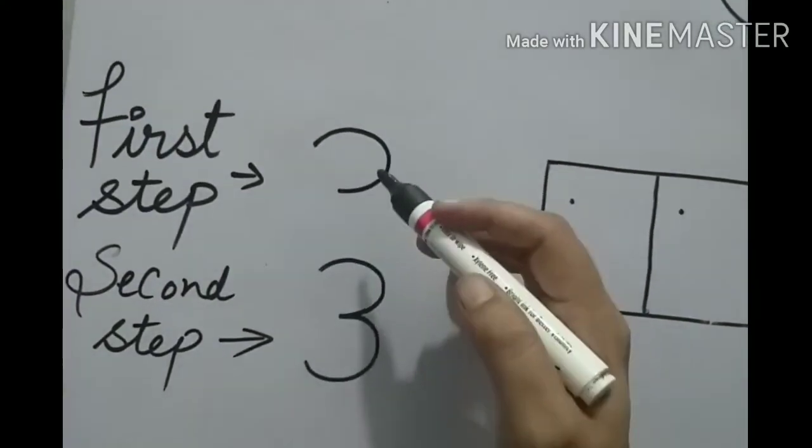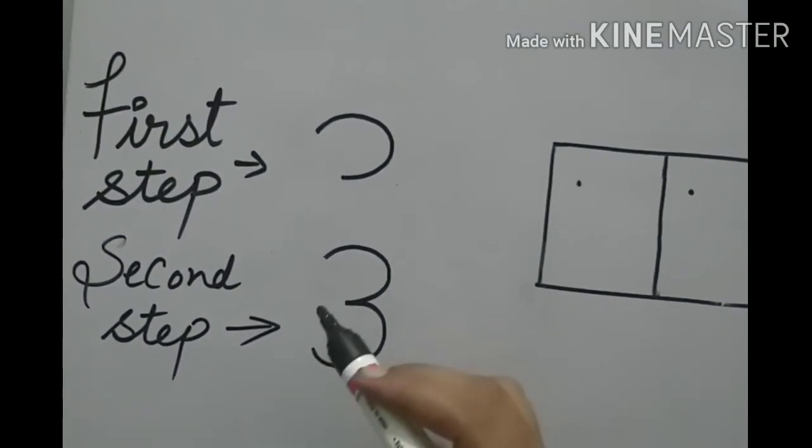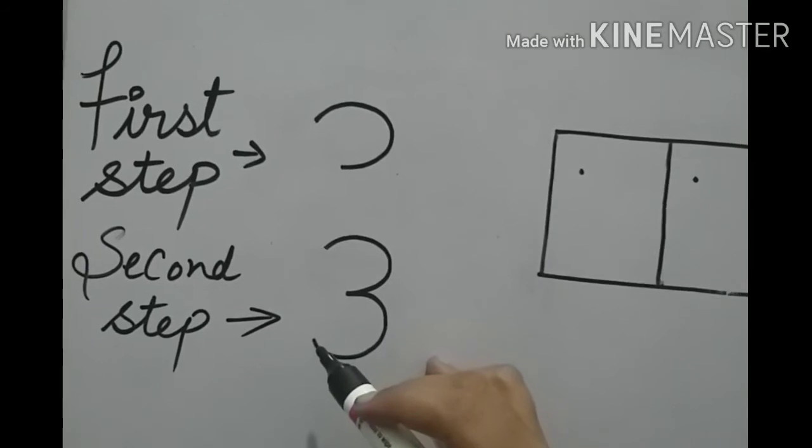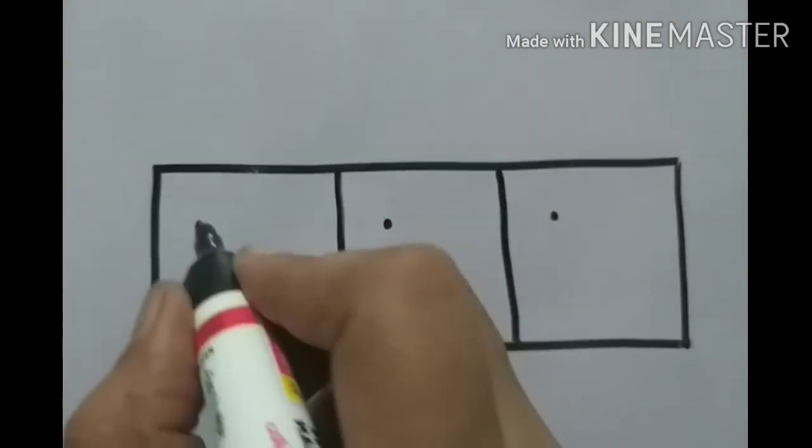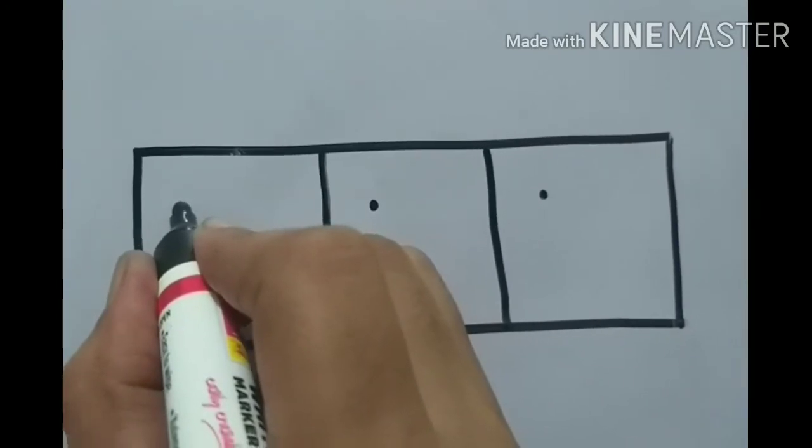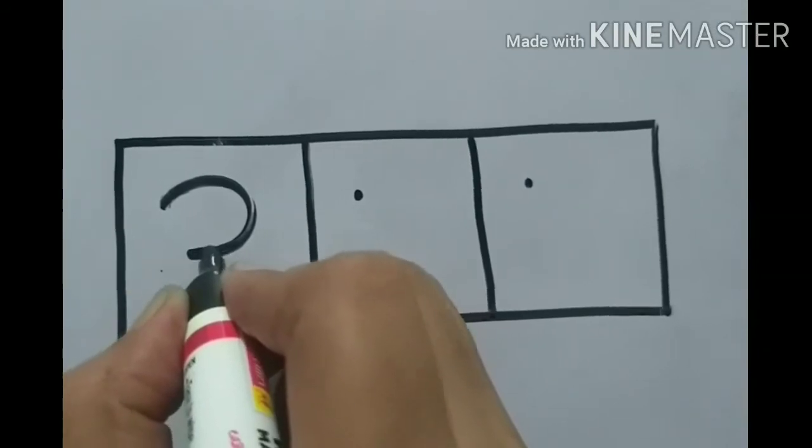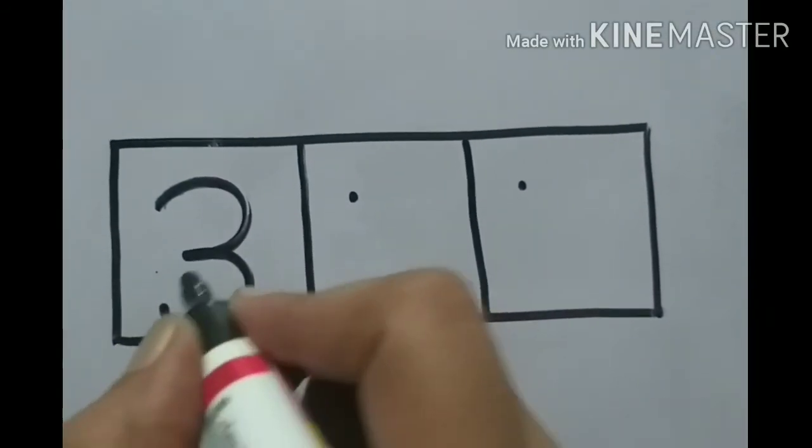Make a curve on the top. And next, second step is make a curve on the top and another curve to the down. Let's write it. Make a curve on the top, then make another curve to the down.